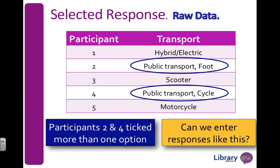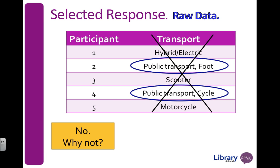What happens if participants tick more than one option? Here I've got participants two and four — they both ticked two options. One ticked public transport and came by foot; the other ticked public transport and cycled. Can we enter data like this? Well, if you said no, you'd be correct. But why not?